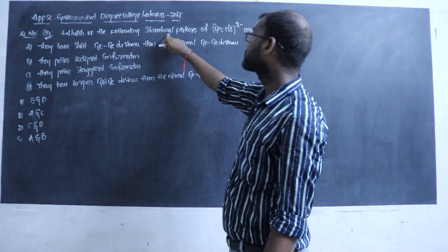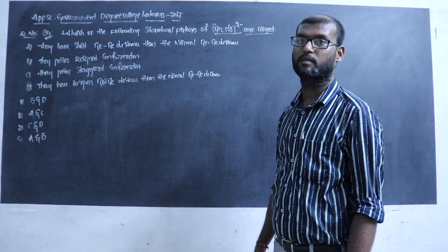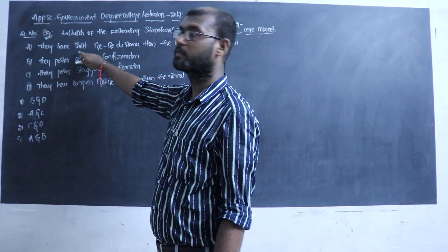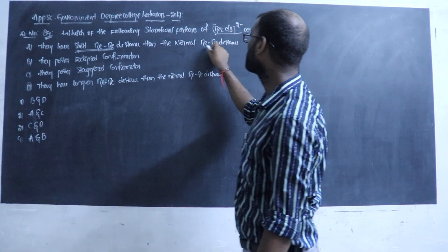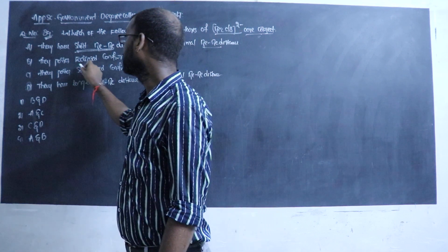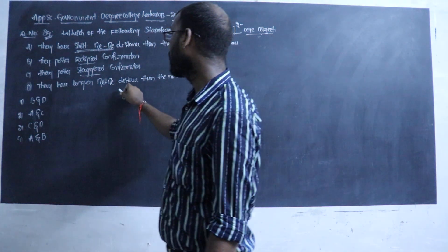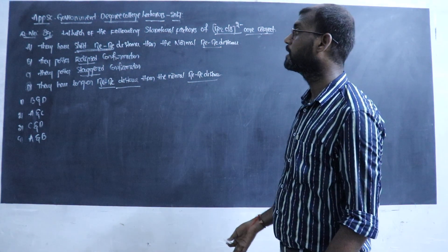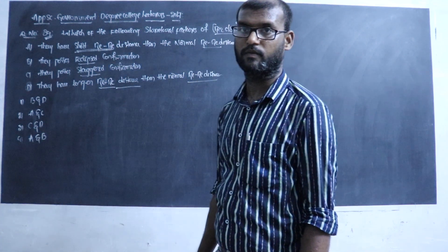Question number 89: Which of the following structural features of RE₂Cl₈²⁻ are correct? Option A: they have shorter rhenium-rhenium distance than the normal rhenium-rhenium distance. Option C: they possess eclipsed conformation. Option D: they possess staggered conformation. Option D: they have longer rhenium-rhenium distance than the normal rhenium-rhenium distance. Statement A refers to the short rhenium-rhenium distance.